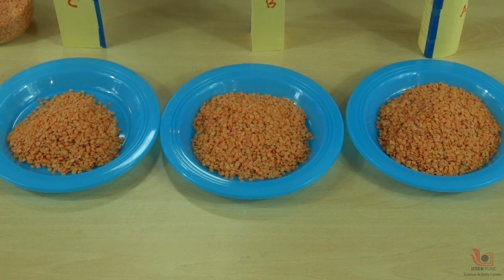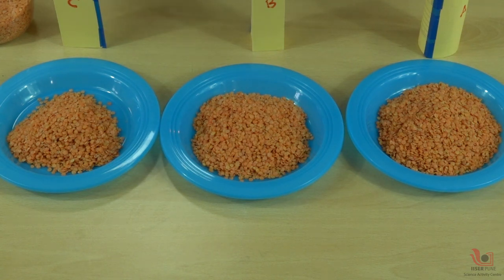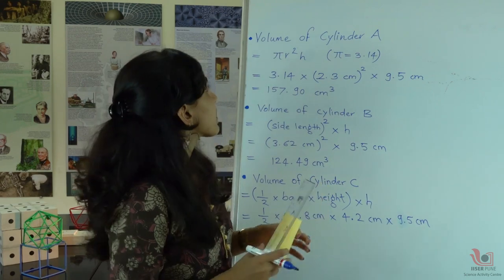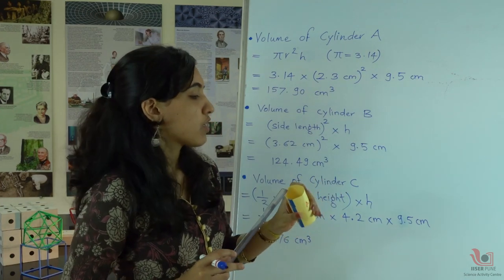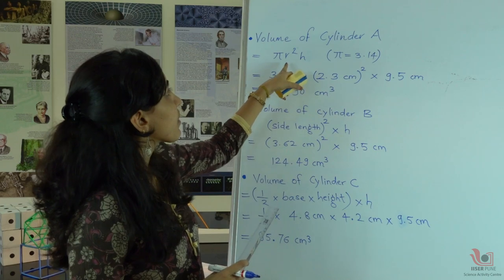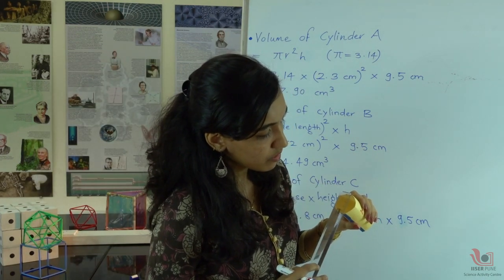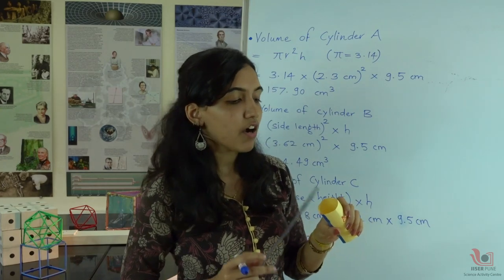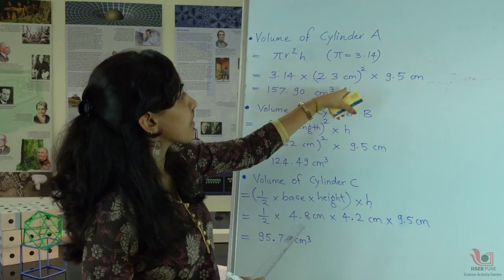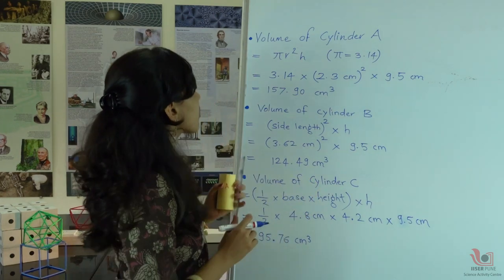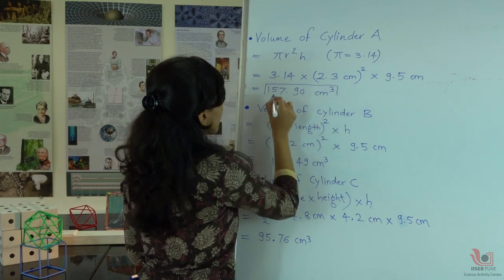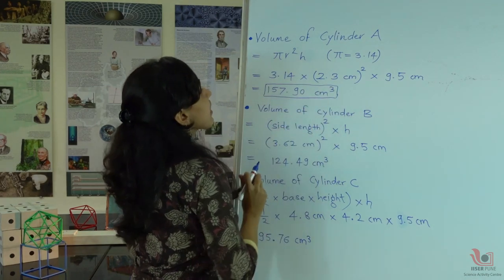Now let's calculate the actual volume of these three shapes using the mathematical formula: the volume of any cylinder is the area of the base times the height. So the volume of cylinder A is π r² h, where π is 3.14, r is 2.3 cm (half of 4.6 cm), and the height is 9.5 cm. The total volume of cylinder A is 157.90 cm³.